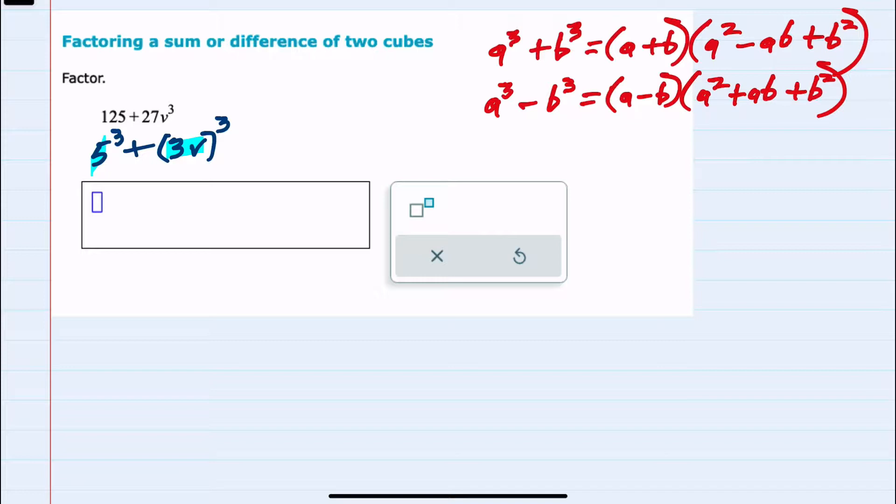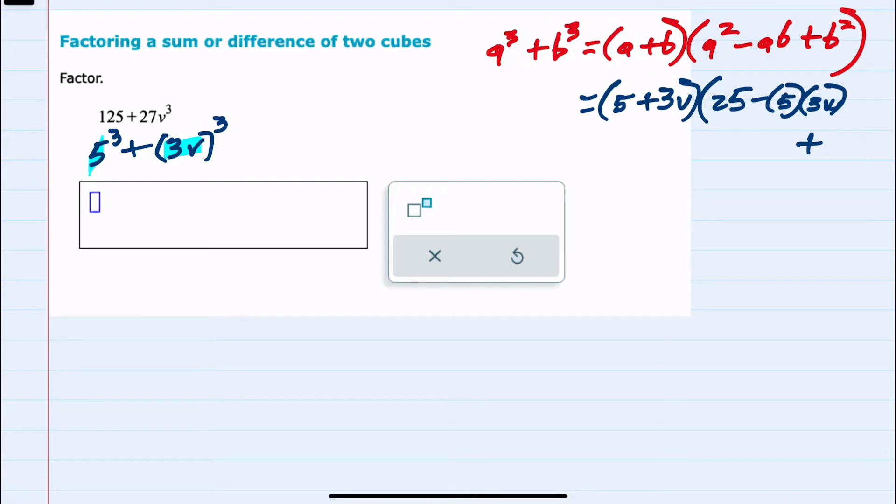Using the sum formula, I would replace a with 5. So this first part would be 5 plus b, which is 3v, so plus 3v times a squared. Again, a is 5, so 5 squared is 25. Minus a times b would be 5 times 3v. And then plus b squared. b is 3v, so 3v squared is 9v squared.